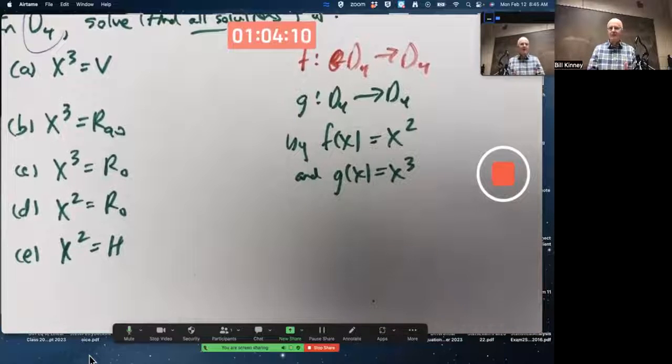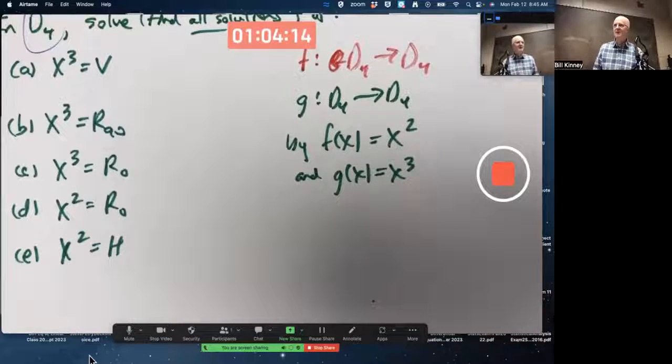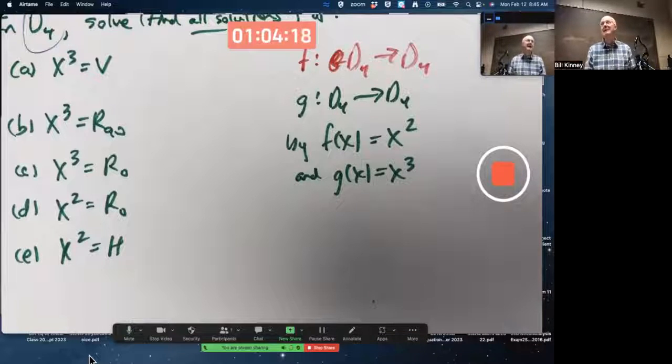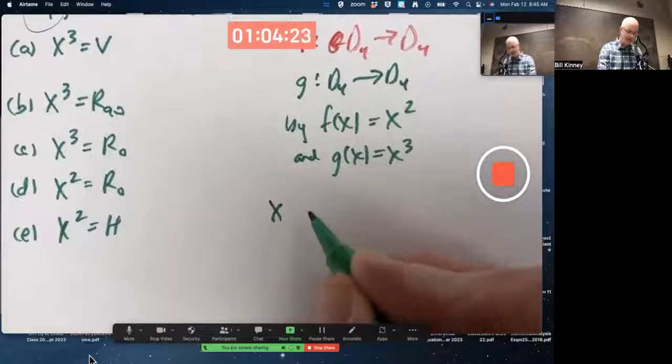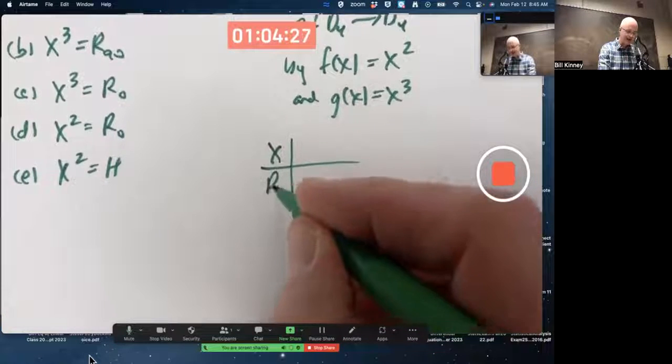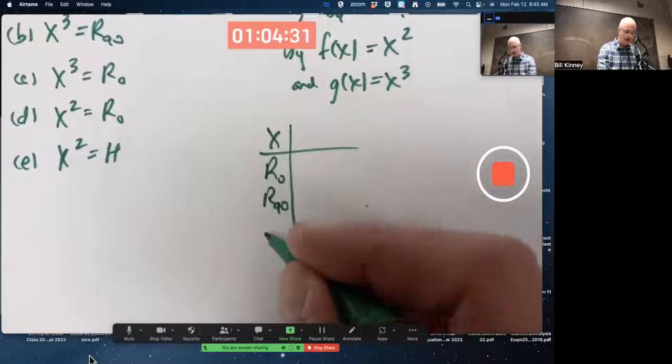And I'm treating these as functions, can I graph them? Can I graph these functions? Well, it depends on what you mean by graph, but I certainly could make a table of values for both of them. Make a table, one column labeled X.